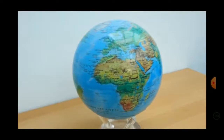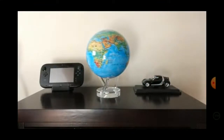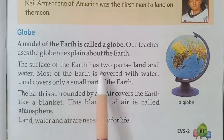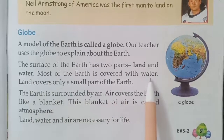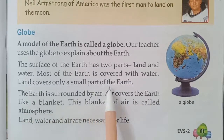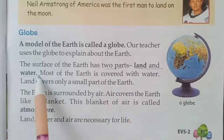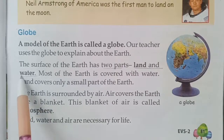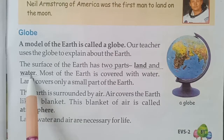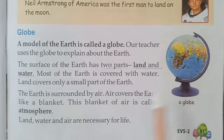The surface of the earth has two parts: land and water. Most of the surface of the earth is covered with water. Land covers only a small part of the earth. Earth's most part — that is 71% — is covered with water, and the remaining 29% is land, which is shown in green, yellow, or brown color on the globe.